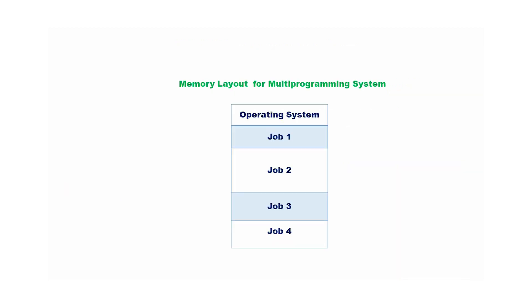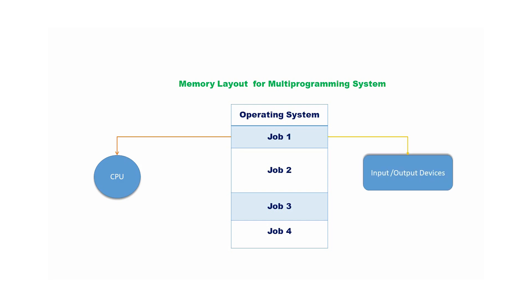For example, assume that there are four jobs in memory. The operating system selects job 1 to execute. After some time, job 1 may need some input-output operation, at which time the CPU is free. A multiprogrammed operating system relinquishes job 1 from the CPU and selects job 2 to execute. After some time, job 2 may also request an I/O operation, so job 2 is released from the CPU and another job is selected for execution. Here, job 4 is selected.